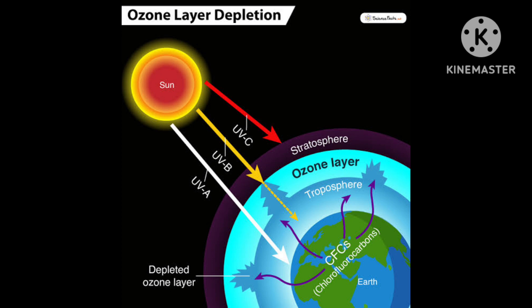In the presence of sunlight, NO is converted into NO₂ (nitrogen dioxide). This NO₂ in turn absorbs energy from sunlight and breaks up into nitric oxide and free oxygen atoms. So NO converts to NO₂, and NO₂ absorbs energy from sunlight and breaks back into NO and O — both very reactive.